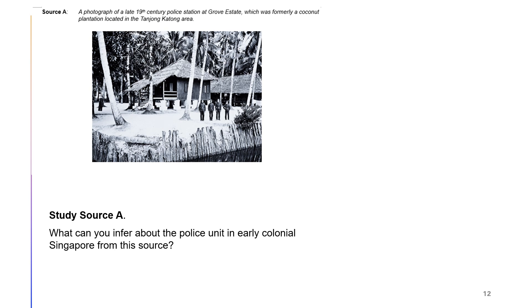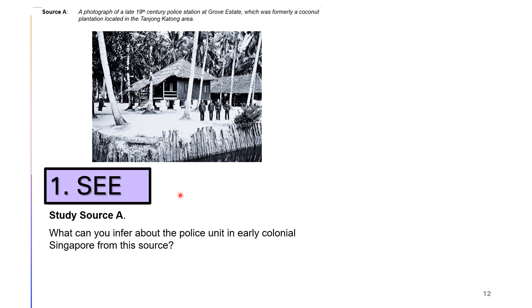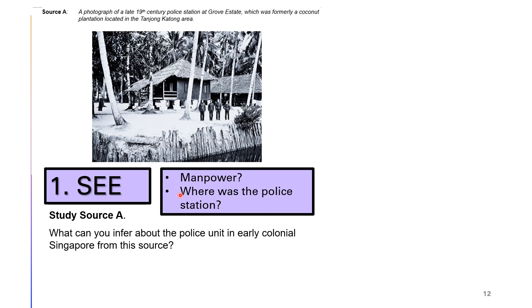So let's everyone take a look at Source A. Look at the photograph and look at the provenance. It is a photograph of a police station located in the Tanjung Katong area. What can you see in this particular photograph? Maybe you want to question what the manpower was like given that there are only four people here. Where was the police station? Why is the police station looking like a hut — is it because it's located away from the town, in the Tanjung Katong area? These are the things you can literally see from the source.